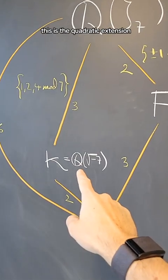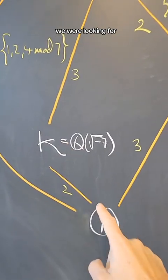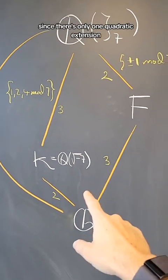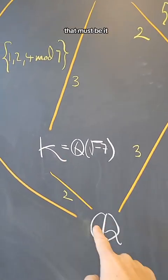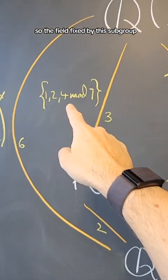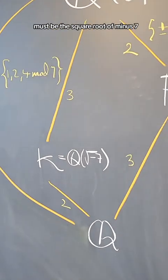And since this is a quadratic extension, that must be k. Therefore, this is the quadratic extension we were looking for. Since there's only one quadratic extension, that must be it. So the field fixed by this subgroup must be the square root of minus 7.